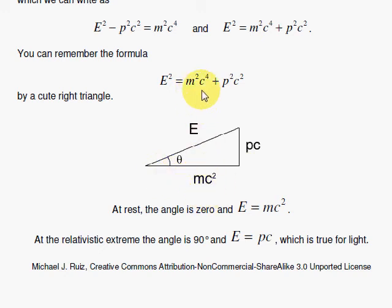you square this thing, m squared, c to the fourth, and you square this, p squared, c squared, add them together, you get the E squared.